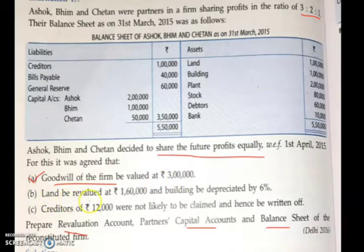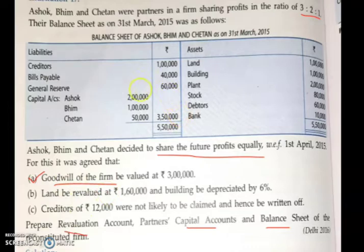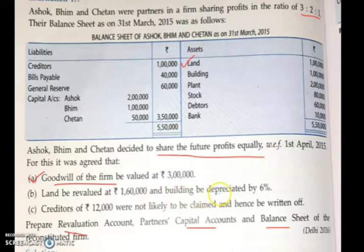Next, land is to be revalued. So, land is one asset that is being revalued. You are revaluing that value before reconstitution at Rs. 1,60,000. So, whenever these adjustments are related to an asset or liability, you have to tick mark that item in the balance sheet. There is one adjustment on land, so you tick mark on land. Next, building — one more item: building be depreciated. Depreciated means decrease, so building also you have to tick mark.